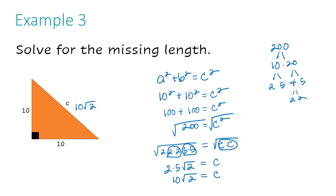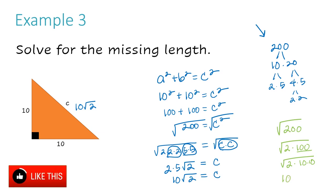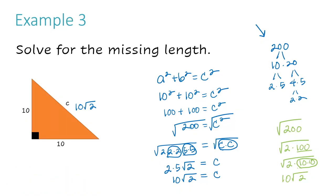Now, some people might ask why I broke down 200 using prime factorization. If you understand radicals well, you could just say: the square root of 200 is the square root of 2 times 100 — and since 100 is a perfect square (10 times 10), you can just take out a 10, giving you 10 square root 2. If you can do that shortcut, do it. But I break it down in case someone needs the extra steps. If you're unsure, check out my Simplifying Radical Expressions video.